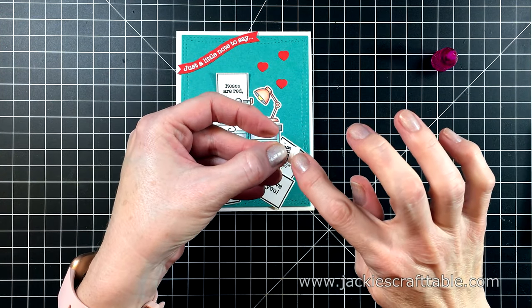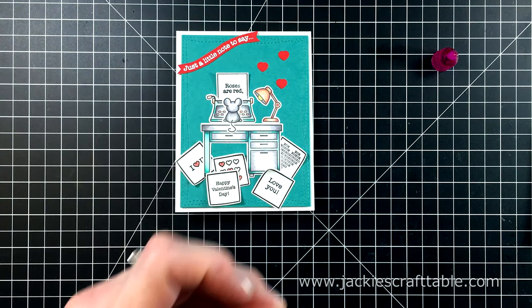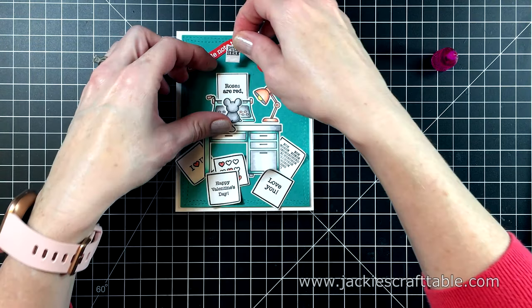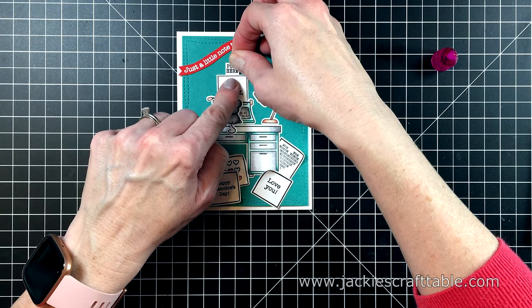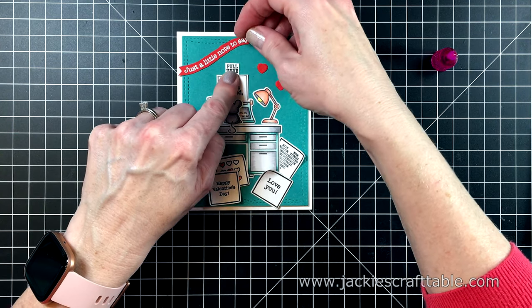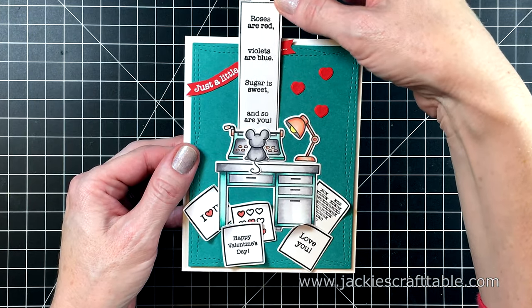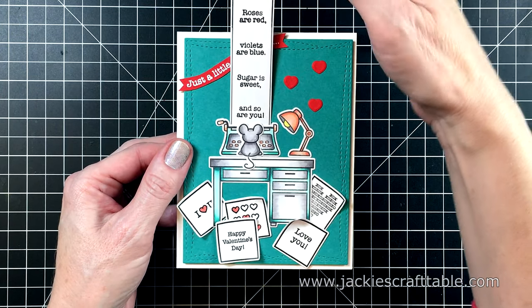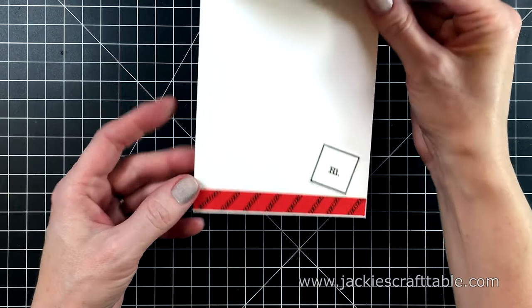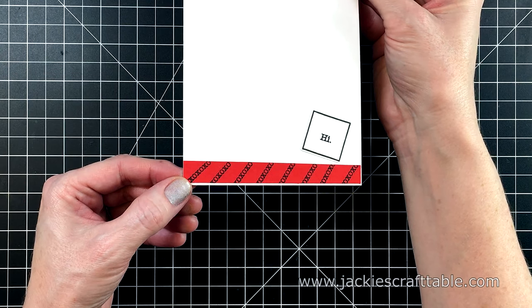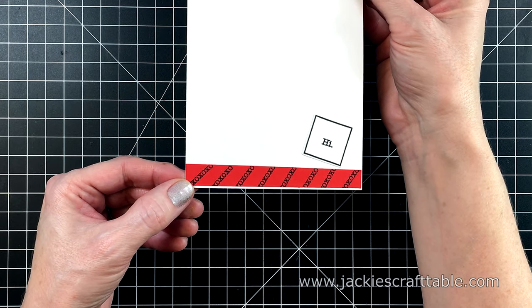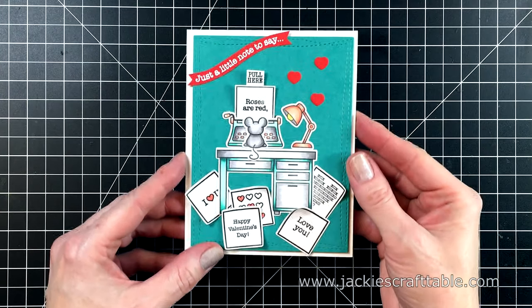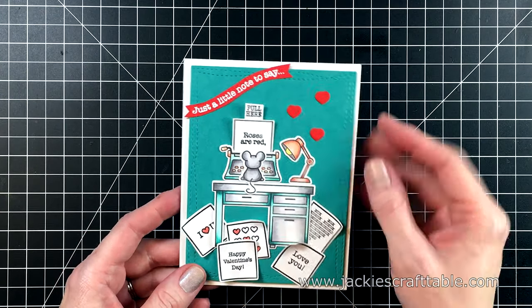There it is—isn't that cute? Such a fun card to put together and very easy. On the inside, I used some more of the red cardstock and I stamped the X's and O's stamp on it, and I used another little note and heart.